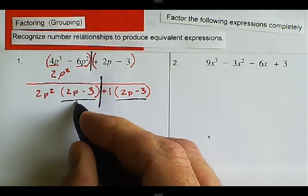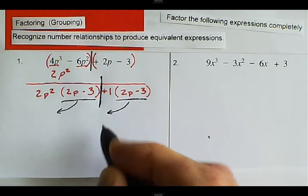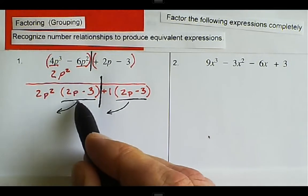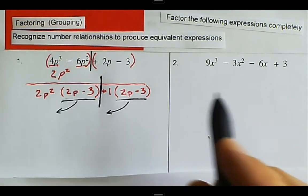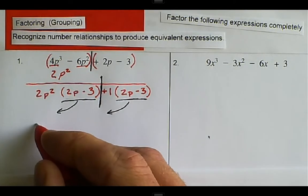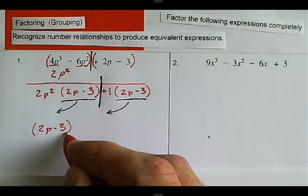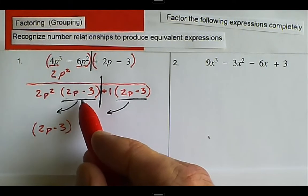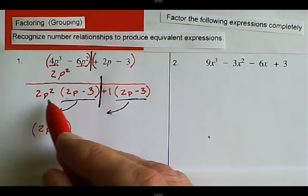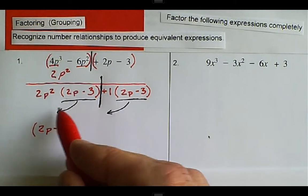We notice that we have a common 2P minus 3 and a common 2P minus 3. We can take the 2P minus 3 and we can factor it out of the first term and the second term there. So we're going to factor that out front. So 2P minus 3 we've taken out. We've taken that out of this first side here.